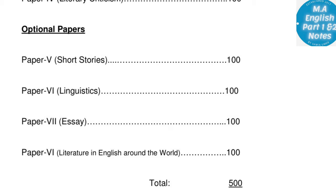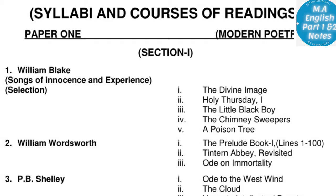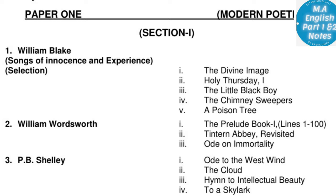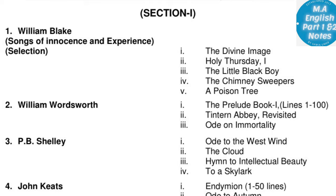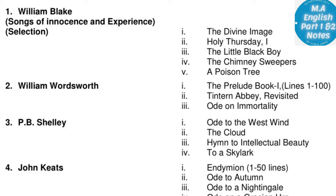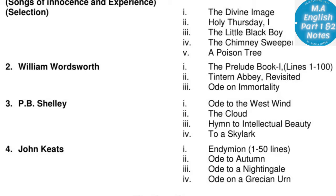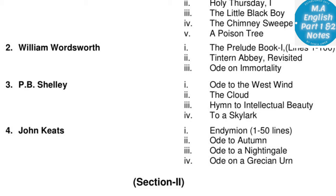It is better to opt for Linguistics or Short Stories. Now for Paper One, Modern Poetry — Section One: William Blake's Songs of Innocence and Experience. Poems included: The Divine Image, Holy Thursday (1), The Little Black Boy, The Chimney Sweeper, A Poison Tree — five poems of Blake. William Wordsworth: The Prelude Book One lines 1-200, Tintern Abbey Revisited, Ode on Immortality — three poems included.